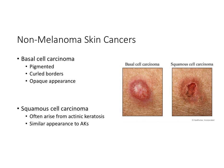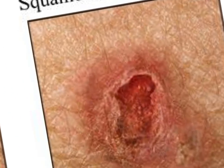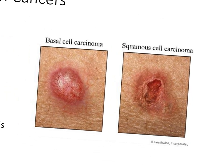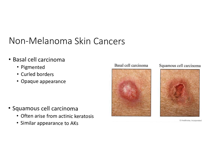Non-melanoma skin cancers are basal cell carcinoma and squamous cell carcinoma. Squamous cell often arises from actinic keratoses — you can see similarities in the indistinct edges and hard scaling. By just looking at these lesions, you cannot always tell actinic keratoses apart from squamous cell carcinomas, so both need to be assessed. Basal cell carcinoma is pigmented, sometimes closer to skin color, with more pronounced curled borders and an opaque, sometimes pearly appearance.